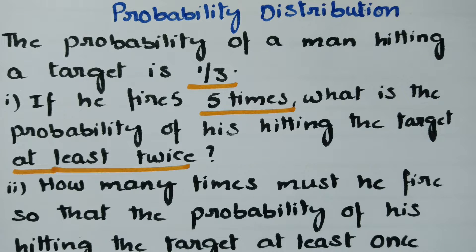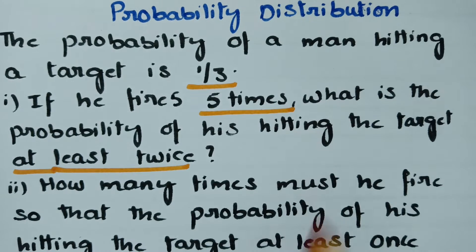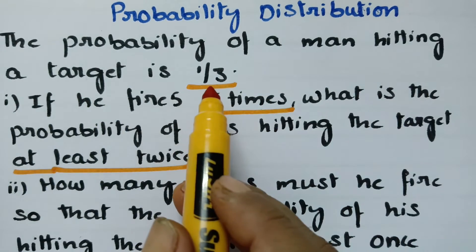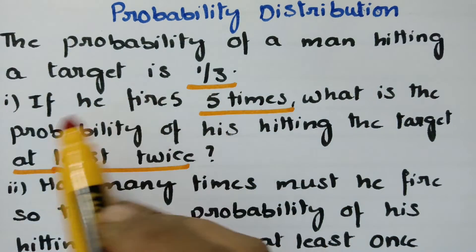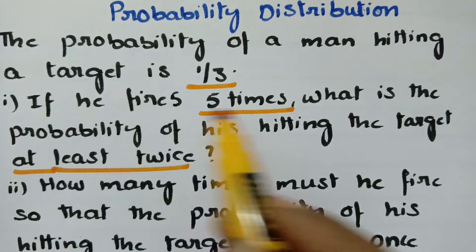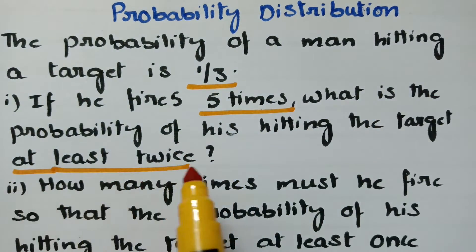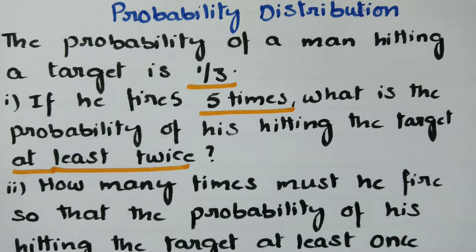Today's video is on binomial distribution. In this video, the probability of a man hitting a target is 1 by 3. If he fires 5 times, what is the probability of his hitting the target at least twice?